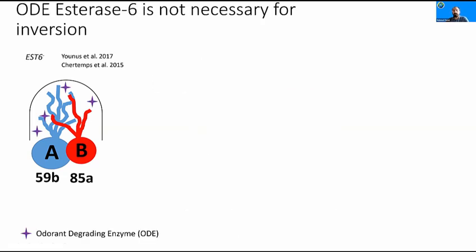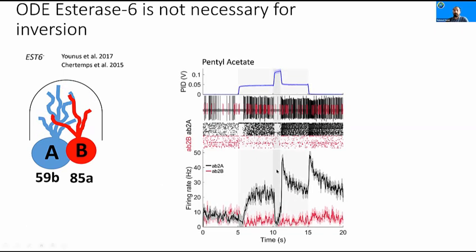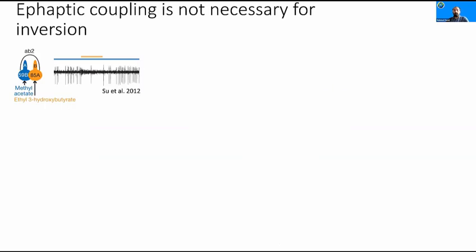Next, we asked whether odorant degrading enzymes could be responsible for the inversion. Esterase 6 is specifically secreted in the sensilla and also acts on pentylacetate, the inverting odor. If we remove this esterase genetically, does it eliminate inversion? It doesn't — we still see the inhibition and rebounds, suggesting that this particular esterase is not the cause of inversion.